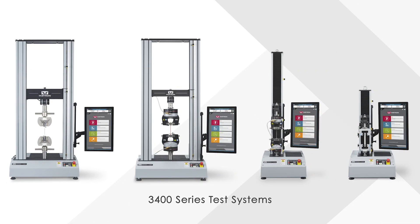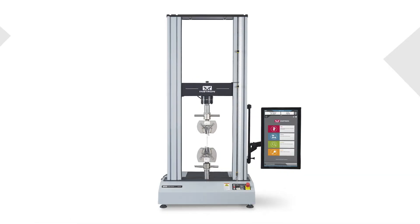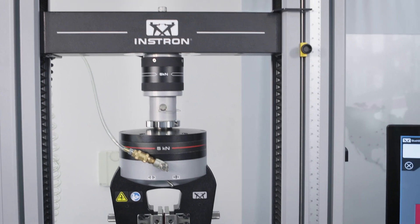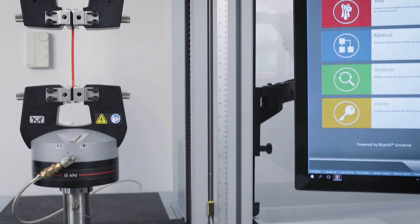The 3400 systems come in single column and dual column configurations, in a range of capacities from 500 newton to 50 kilonewtons, and are compatible with Instron's expansive collection of accessories, including grips, fixtures, load cells, and extensometers.